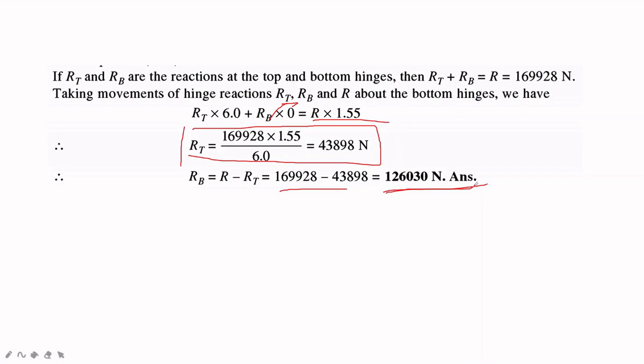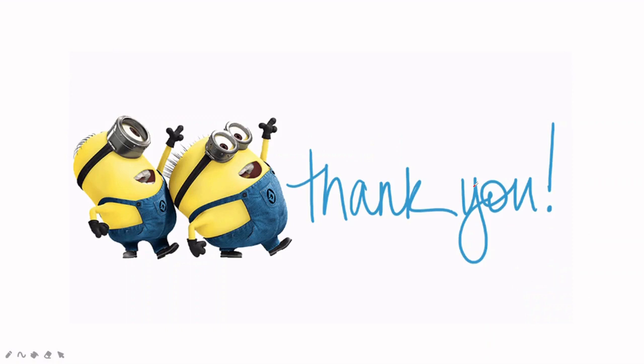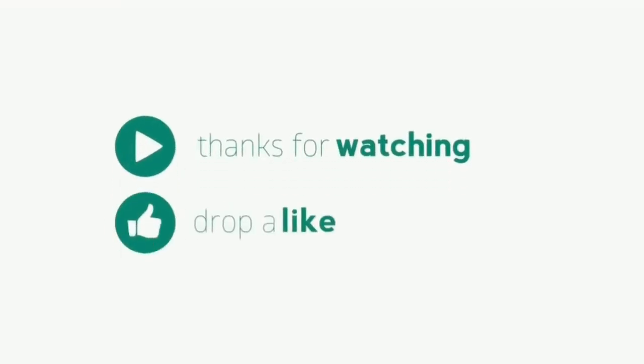So the individual hinge reactions are RT = 43,898 N (top hinge) and RB = 126,030 N (bottom hinge). Similar types of problems will appear in your exam on lock gates. It is very easy — just compare with the standard lock gate diagram from the previous slides. I hope you understand the concept of lock gates. Thank you — please like and subscribe to my channel.